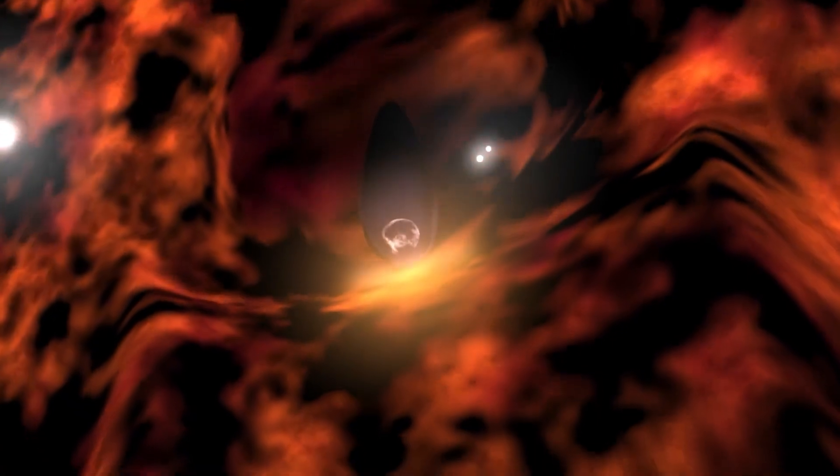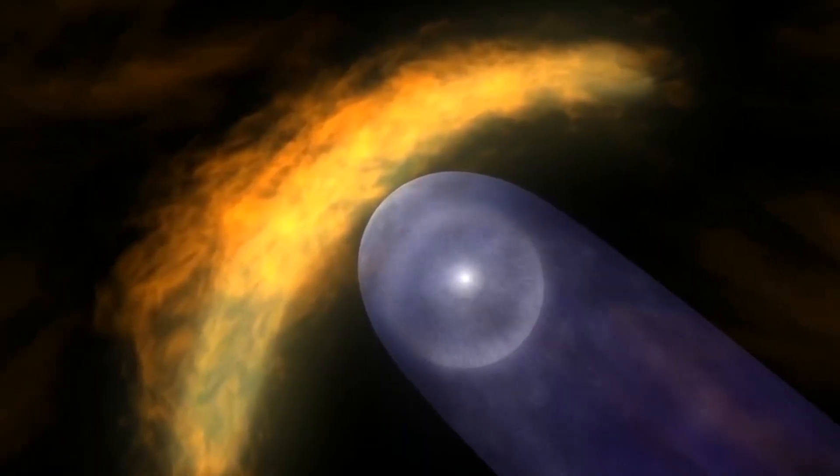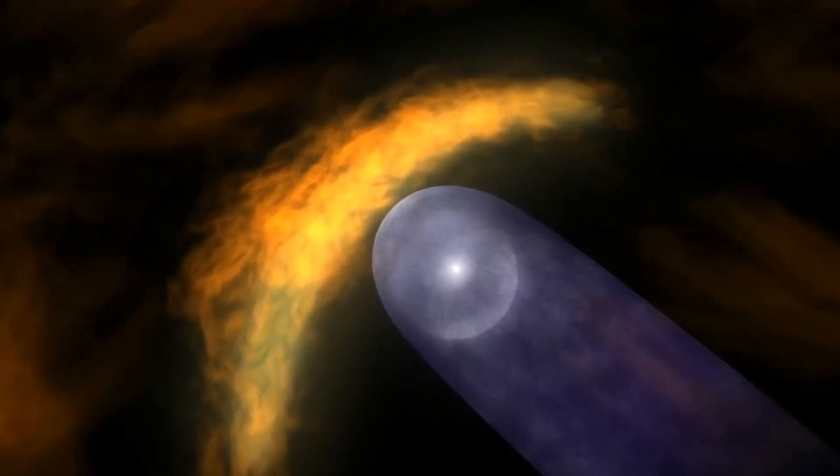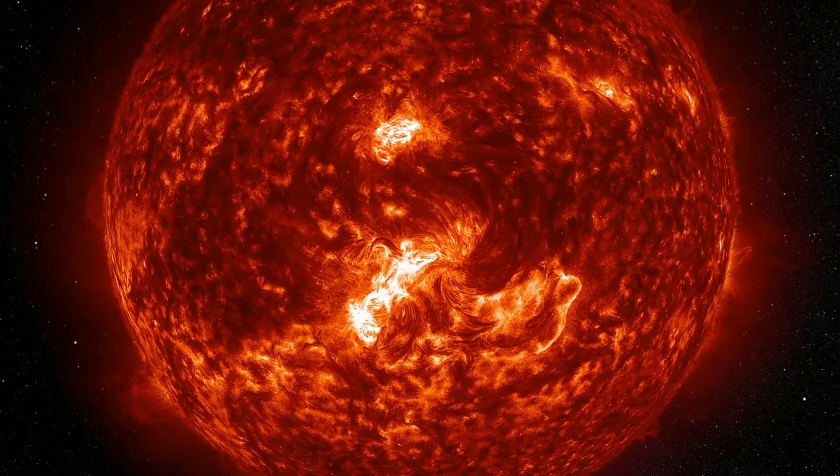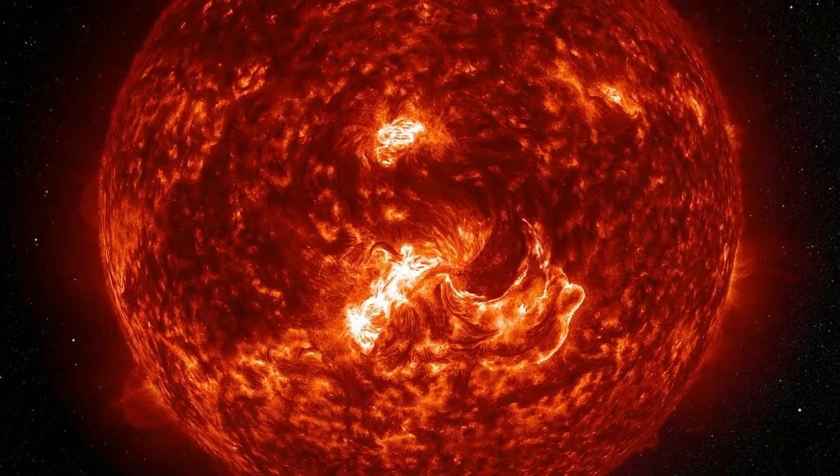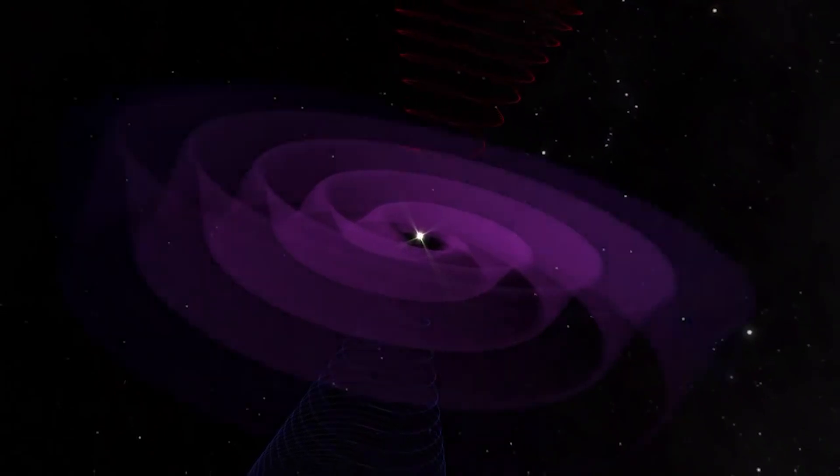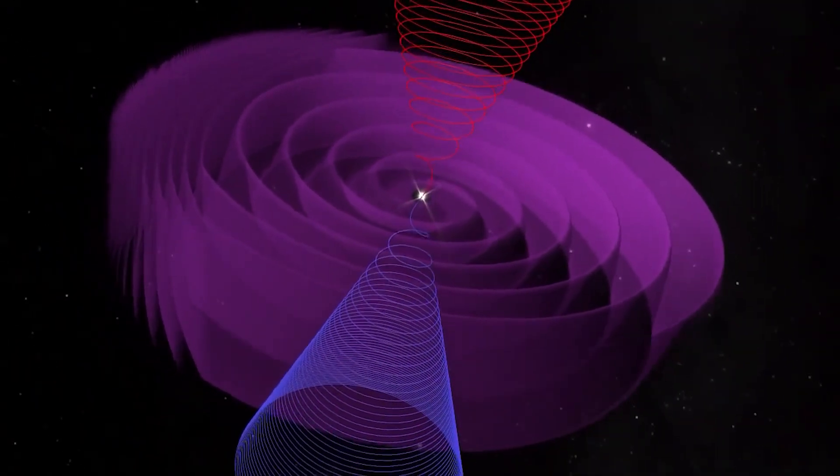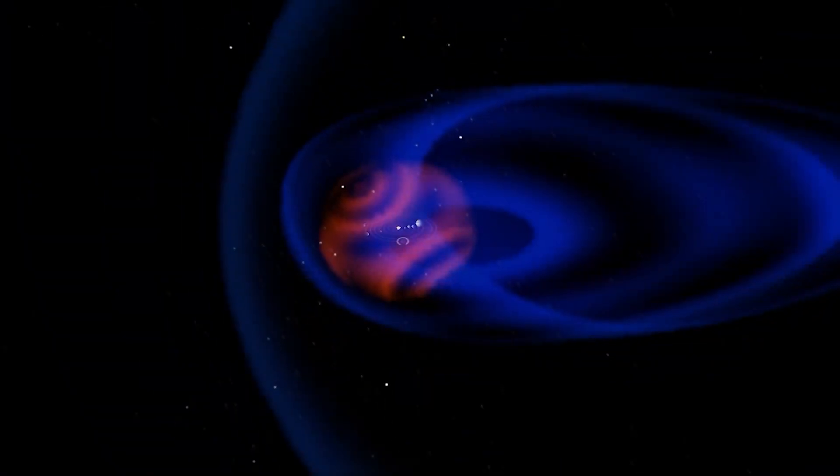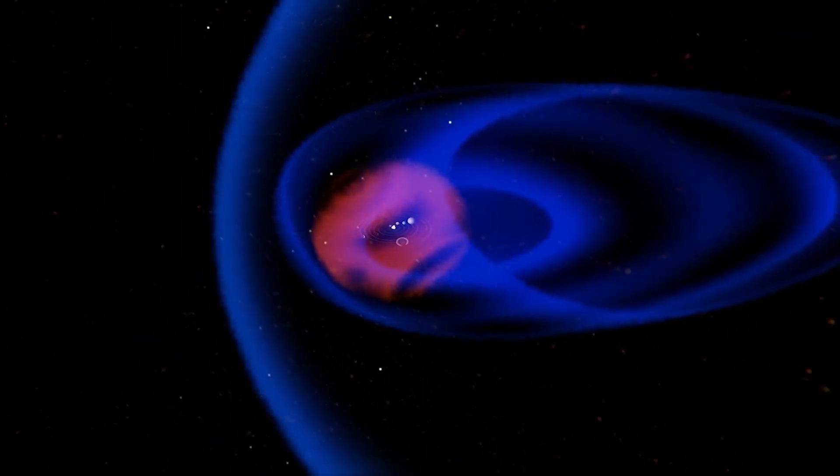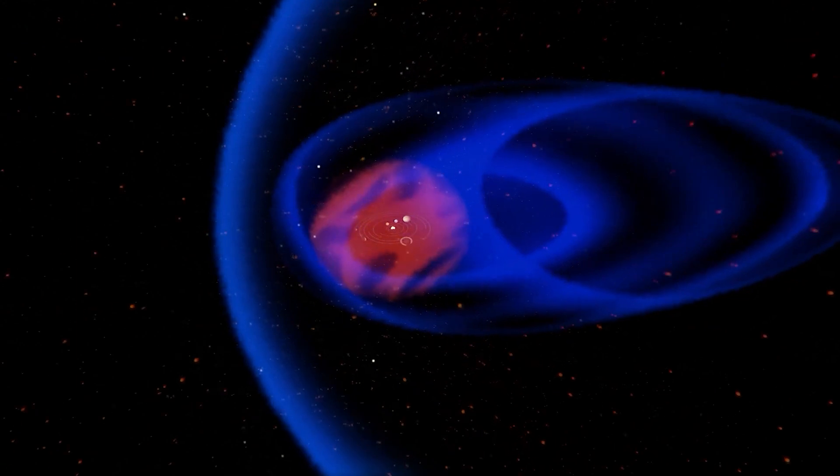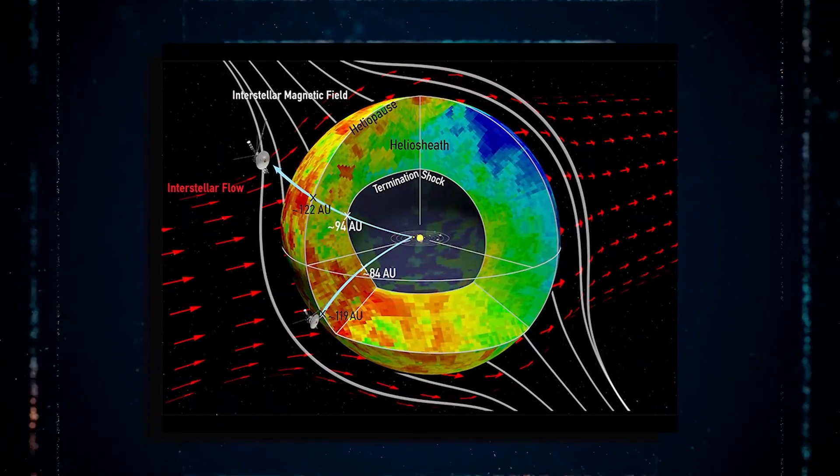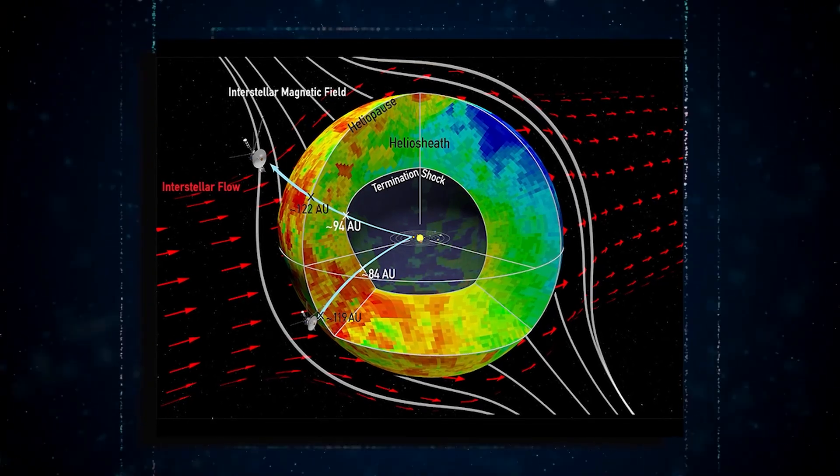The shape of the heliopause is not fixed but rather subject to fluctuations influenced by the interstellar gas wind caused by the Sun's motion through space. As the Sun travels, it creates a magnetic bubble or foam within this boundary, shaping the outer region of the heliosphere, which is the space influenced by the Sun's magnetic field and energetic particles. This magnetic foam contributes to the complex structure and behavior of the heliopause.